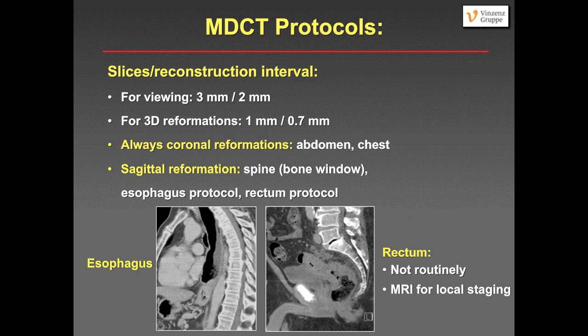Other important parameters for CT scanning are slice thickness and reconstruction interval. For viewing, we always use 3 mm thick slices with a 2 mm reconstruction interval. For 3D reformations we use thin slices, and we always perform coronal reformations of the abdomen and chest, and sagittal reformations of the spine in bone window. For the esophageal cancer protocol we also do sagittal reconstructions, and for rectal protocols — not routinely since MRI is standard for local staging, but if MRI cannot be done — we also do sagittal reconstructions.